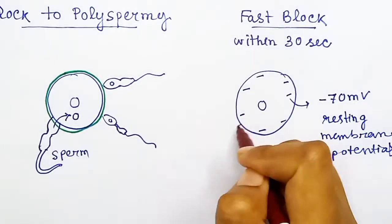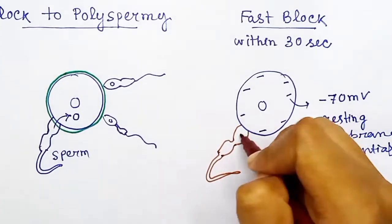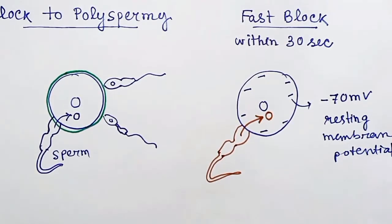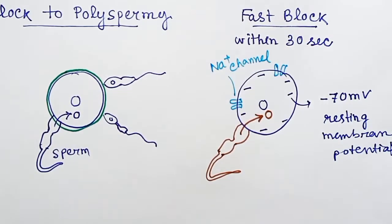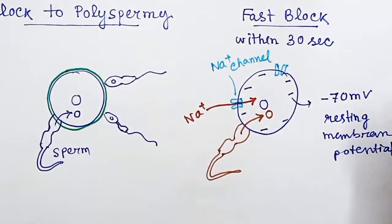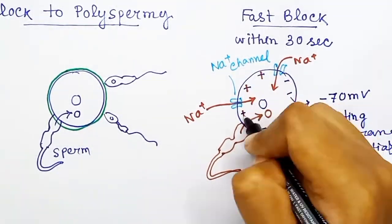This changes the membrane potential of the ovum. The resting membrane potential of the ovum is negative, that is minus 70 millivolt. After penetration of one sperm, the sodium channels on the egg cells open and sodium ions get inside the ovum.